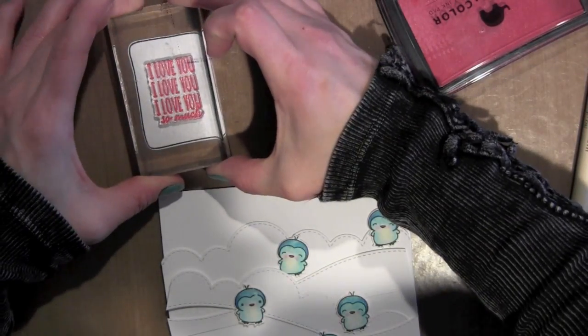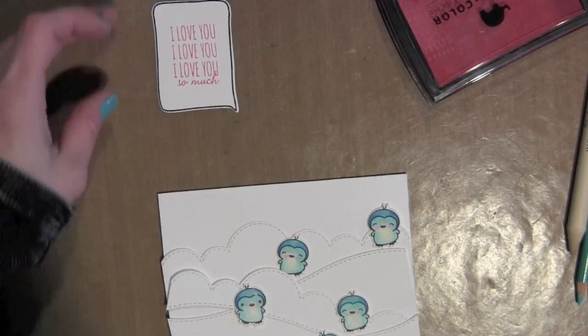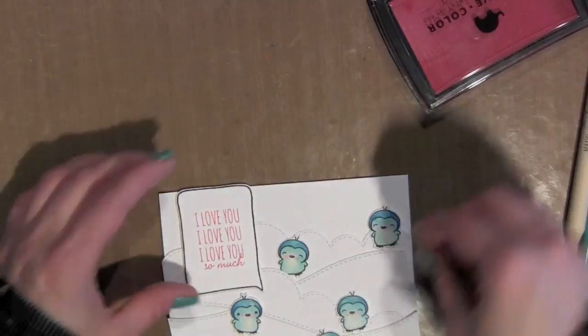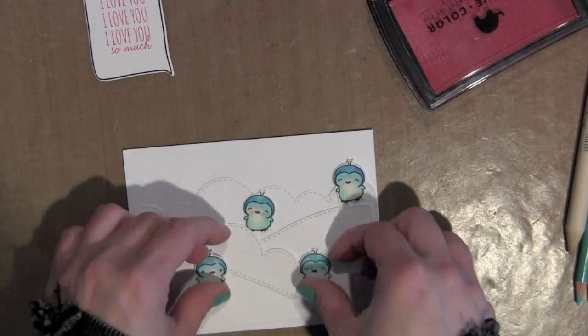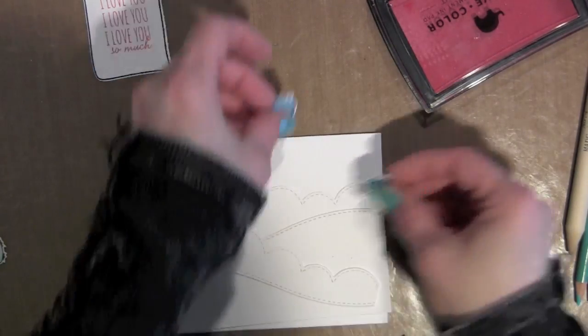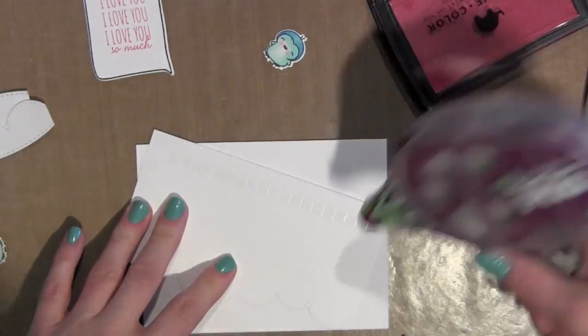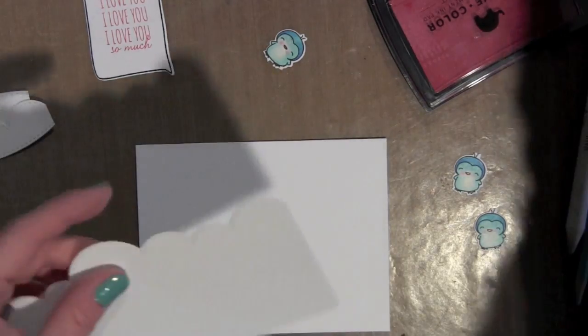I'm going to ink up one of the greetings using the Lollipop Mama Elephant ink pad and stamp that right in the thought bubble. Now there is a cute little heart in the stamp set that I'm going to actually use above and below the greeting in the thought bubble.